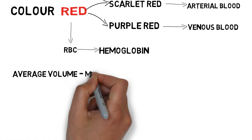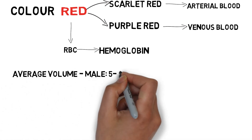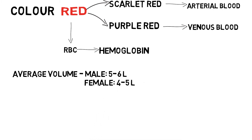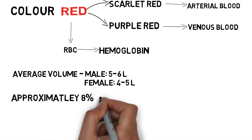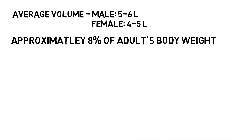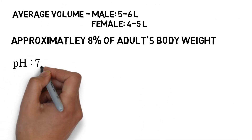The average volume of blood in adult males is five to six liters and in females it is four to five liters. If the blood volume goes higher than six liters we call this state hypervolemia, and if the volume decreases below normal we call it hypovolemia. Blood makes approximately eight percent of an adult's body weight.